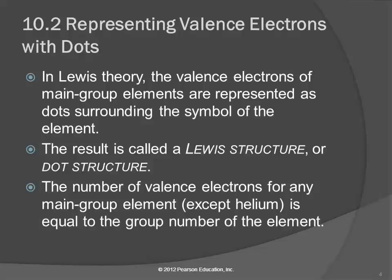In Lewis theory, we represent valence electrons as dots. The valence electrons are important because those are the ones on the outside of the atom and those are the ones that are involved in bonding and chemical interactions with other atoms. So we represent the valence electrons as dots around the symbol of the element. That's called a Lewis structure or a dot structure, and sometimes they're called electron dot structures.